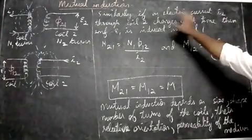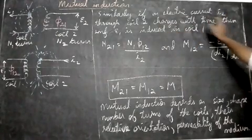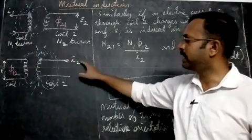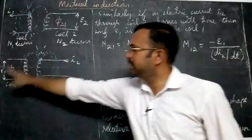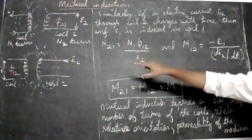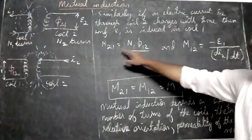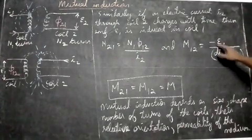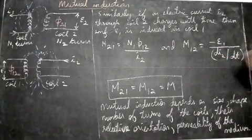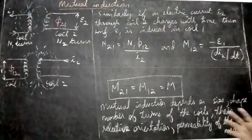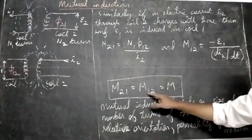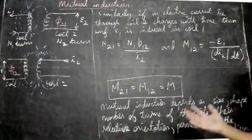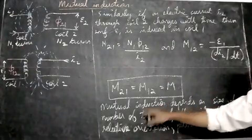Similarly, if the current I2 through coil 2 changes with time, then EMF E1 is induced in coil 1. In that case, M12 equals N1·Φ12 divided by I2, and M12 equals minus E1 divided by dI2/dt. It can be shown that M21 equals M12, both equal to capital M, the mutual inductance.